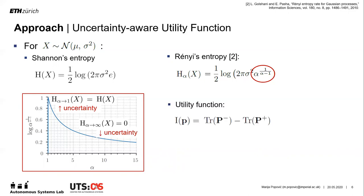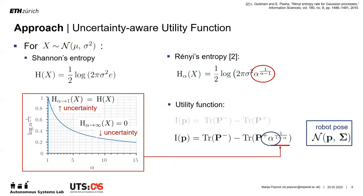Whereas typical utility functions are defined based only on the trace of the GP covariance matrix, or the map, we now propose including the Renyi term in the posterior to scale the value of future information. Our insight is to relate alpha to the robot pose uncertainty predicted by the state estimation system. Intuitively, we desire high information gain when the robot is well localized, and low information gain when the robot is lost to achieve consistent mapping.